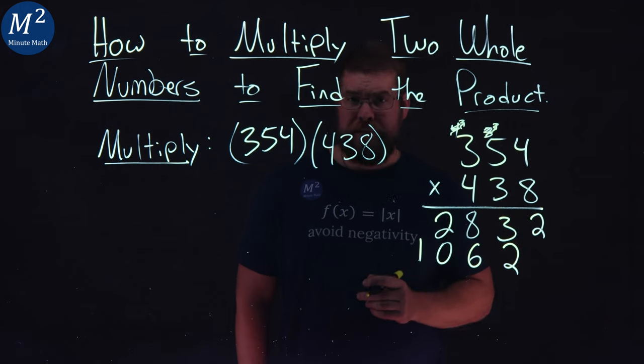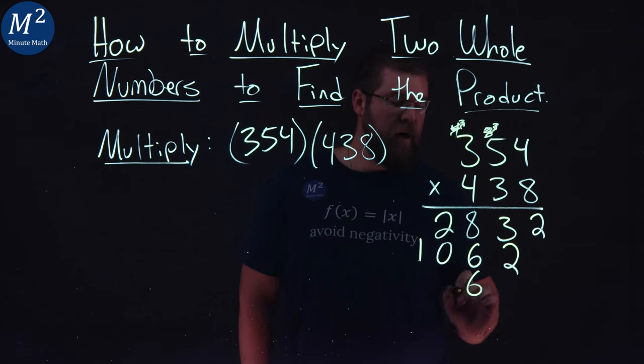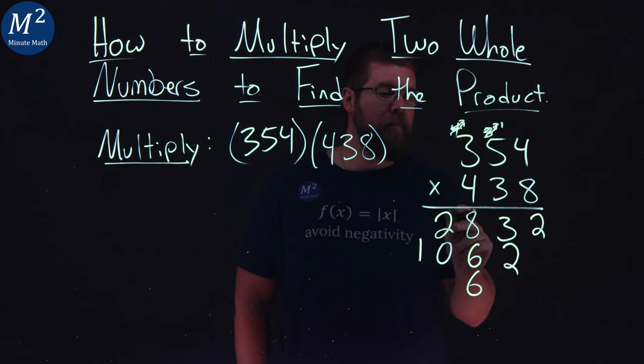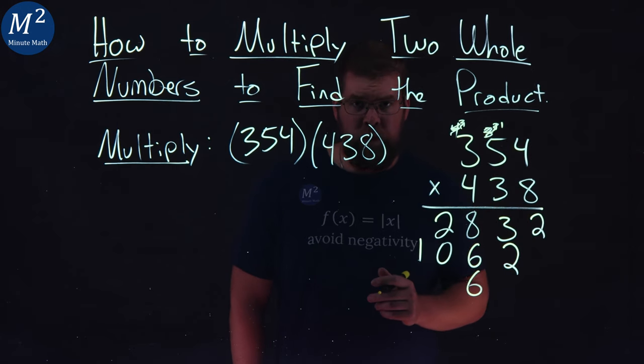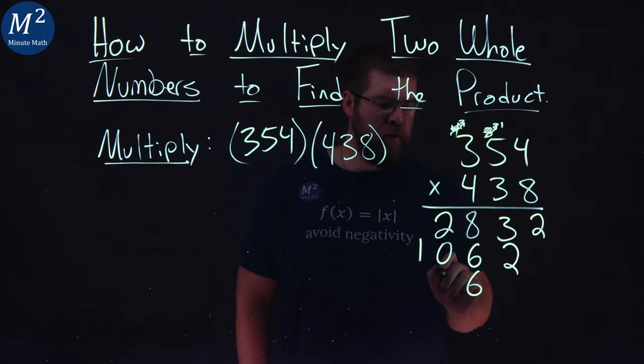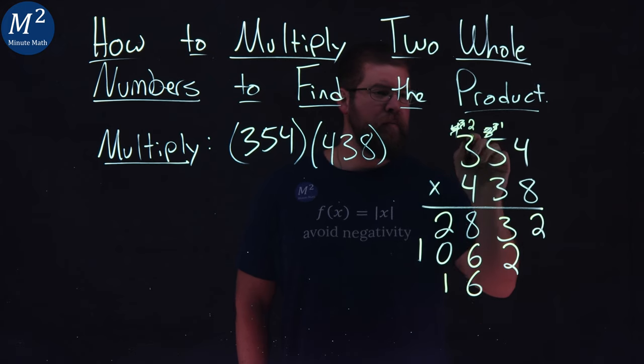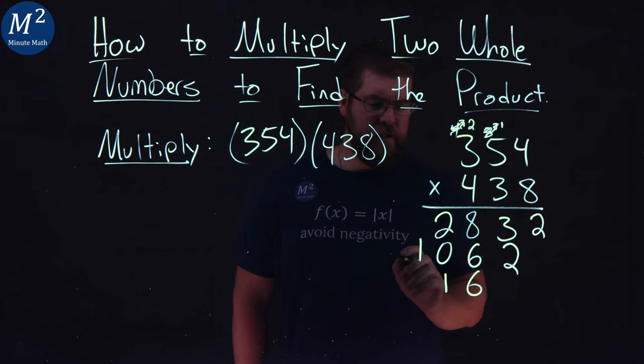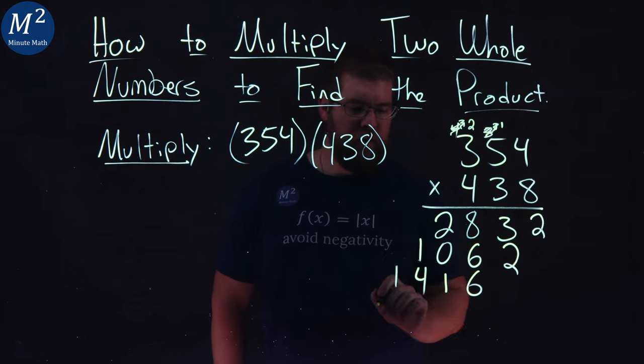4 times 4 is 16. 6 goes here in the hundreds place, carry the 1. 4 times 5 is 20, plus 1 is 21. Put down 1, carry the 2. And 4 times 3 is 12, plus the 2 gives me 14. 14 right here.